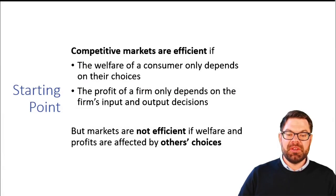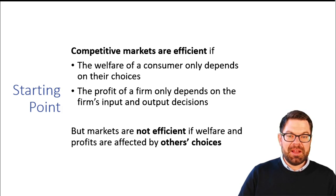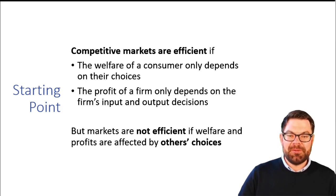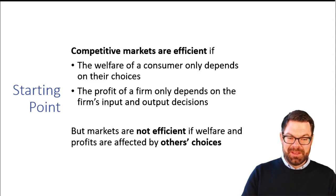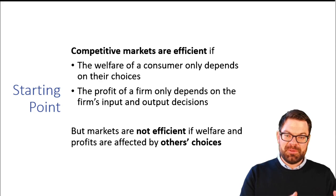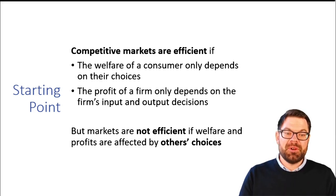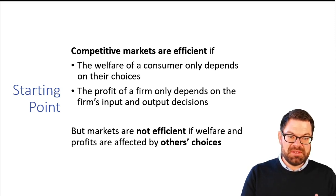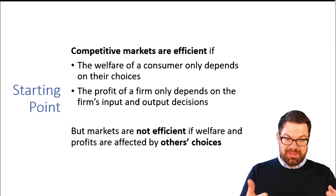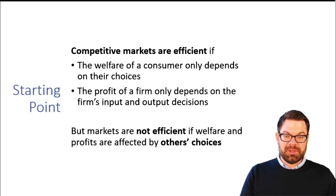Earlier in this course, and also in Micro 1 or in Intermediate Micro, we have learned that under certain conditions, competitive markets are efficient. They're always efficient if the welfare of a consumer depends on that consumer's choices, and if on the side of the producers, the profit of a firm also only depends on that firm's choices — namely the choices of what inputs they use and what they produce, in what quantity.